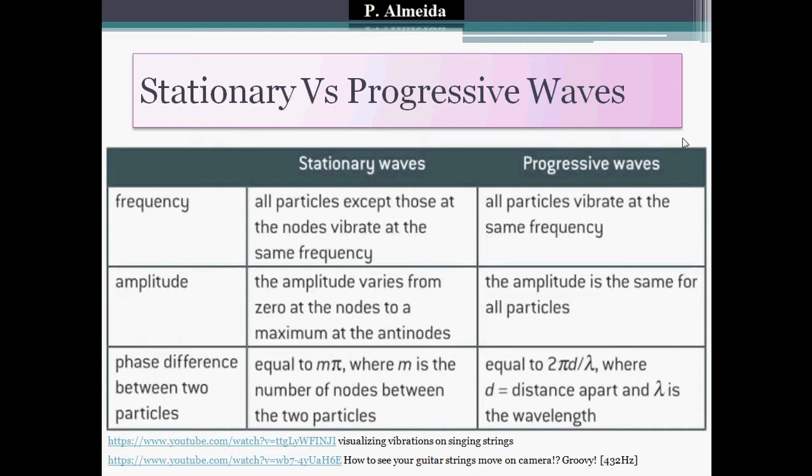For progressive waves: all particles vibrate at the same frequency, and all particles have the same amplitude. The phase difference equals 2π d over λ, where d is the distance apart between the two points and λ is the wavelength.